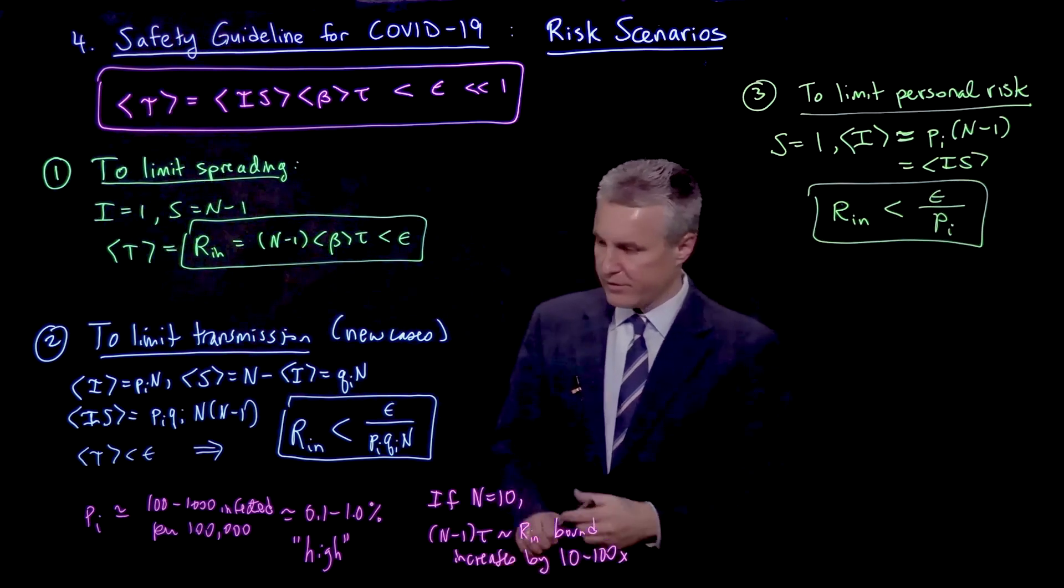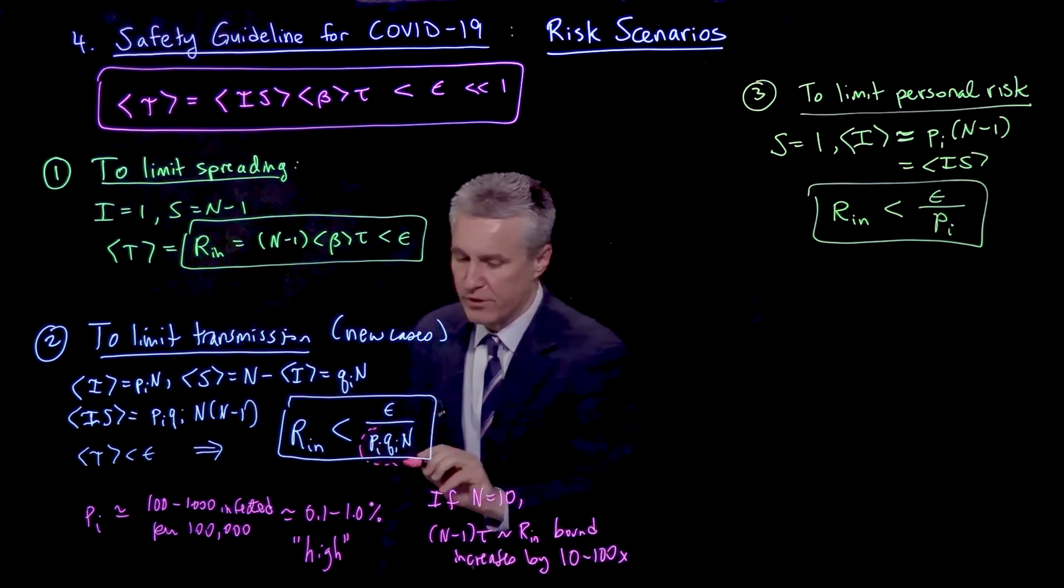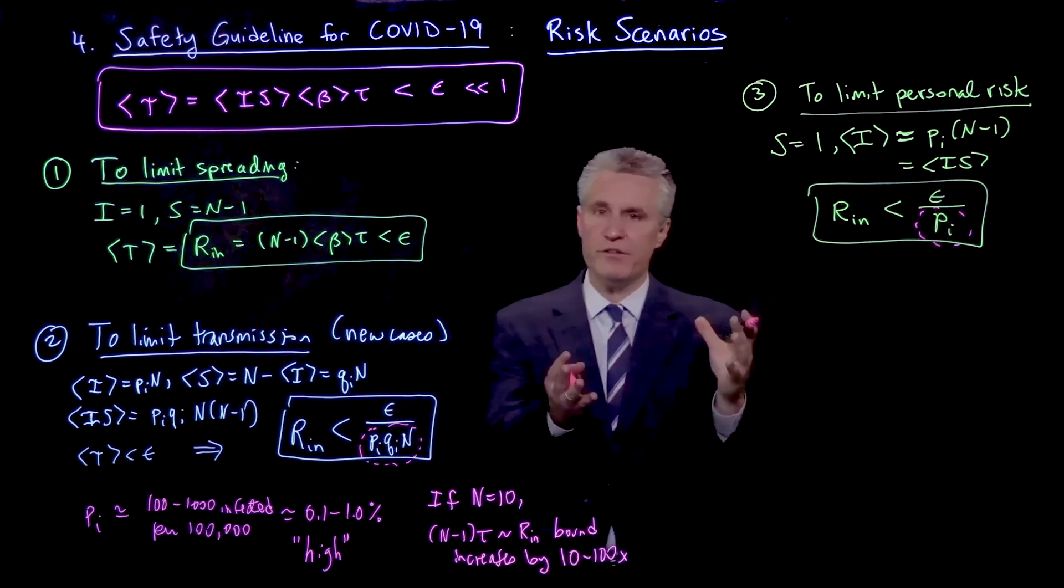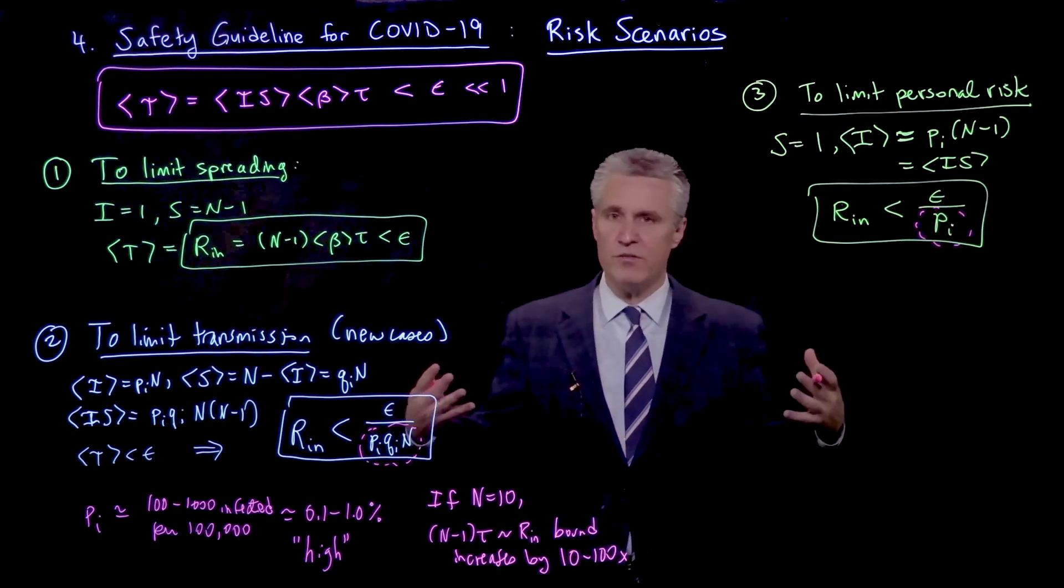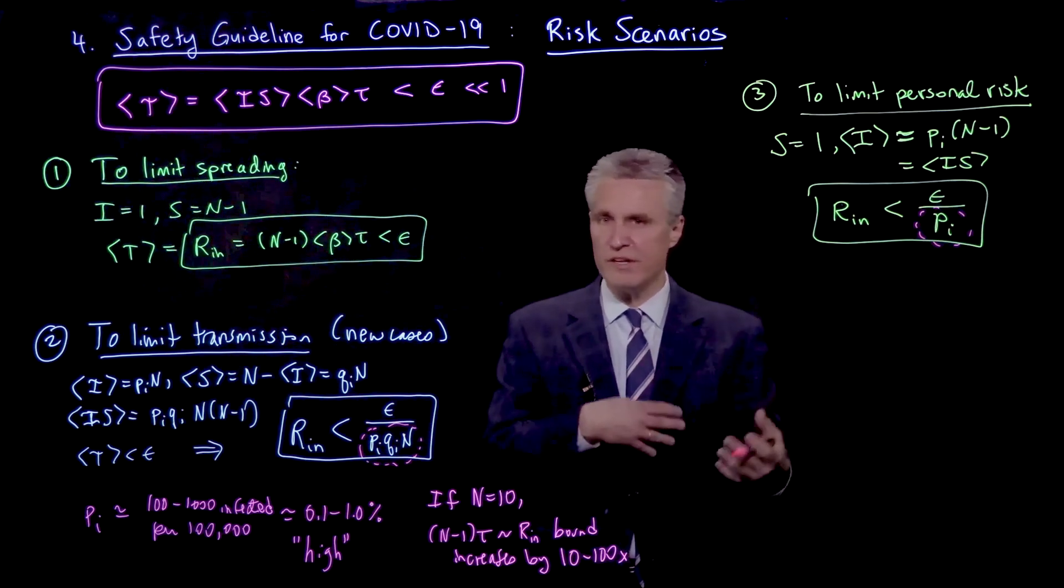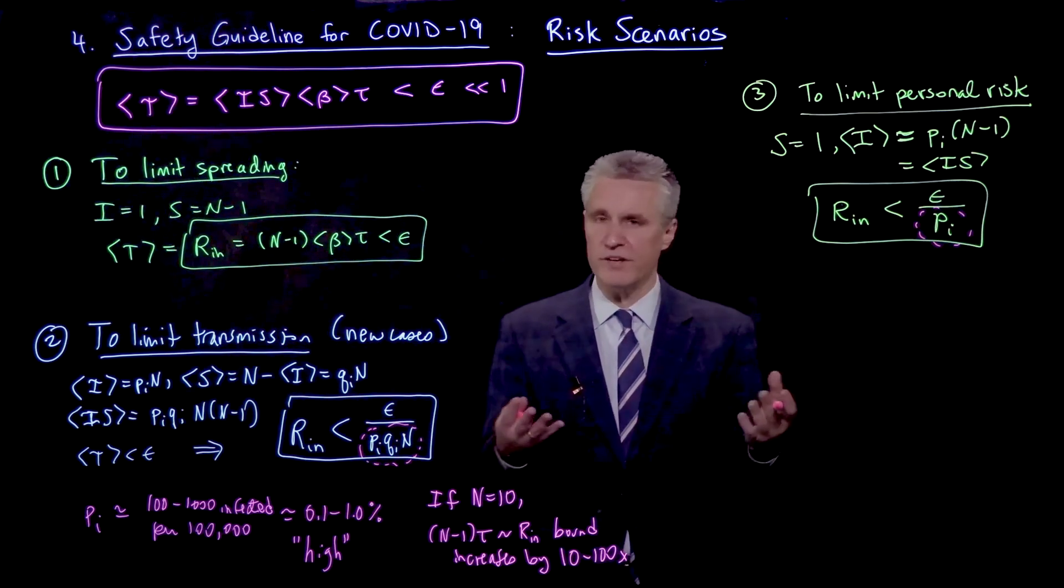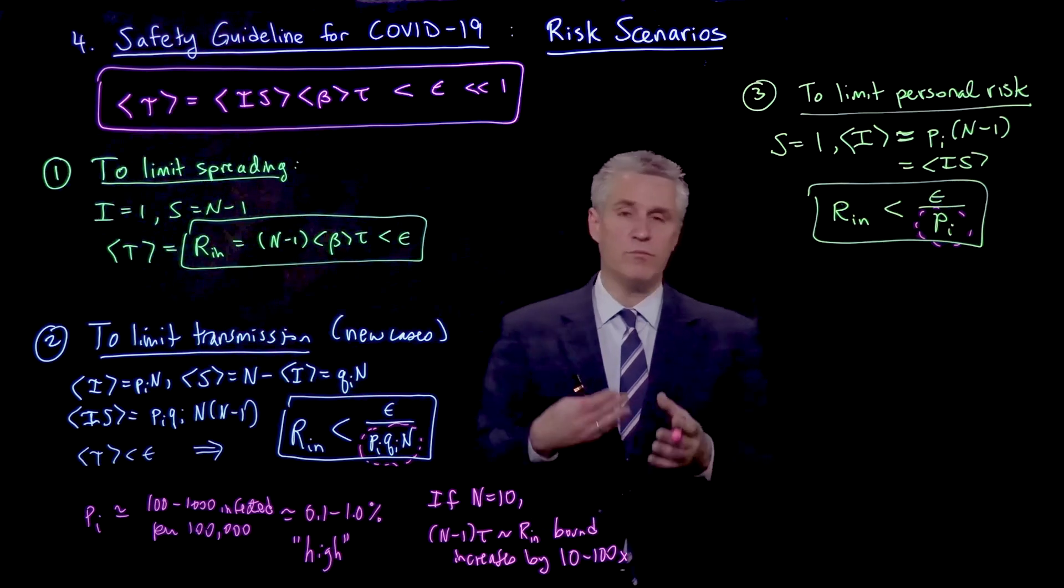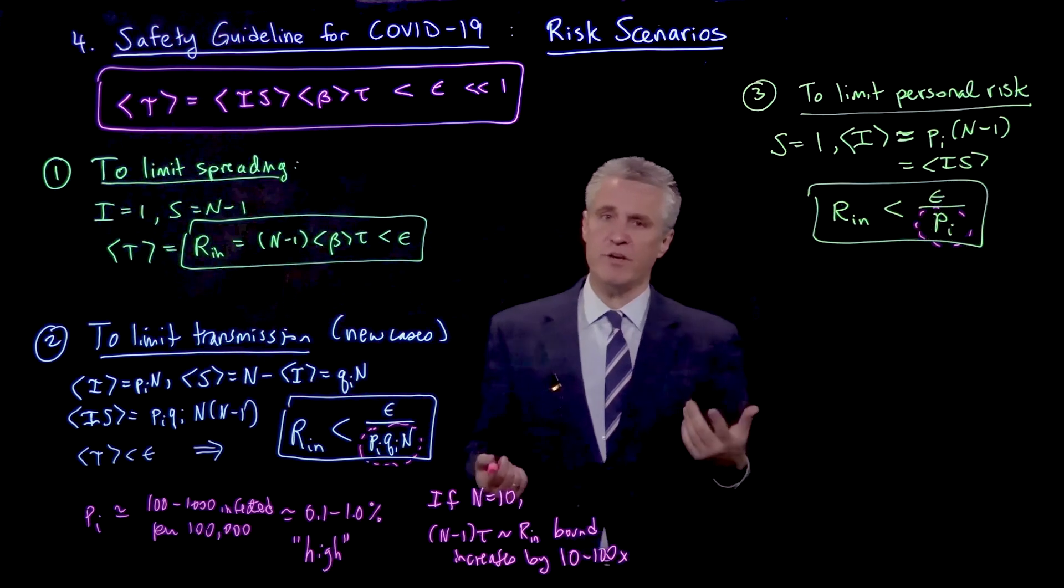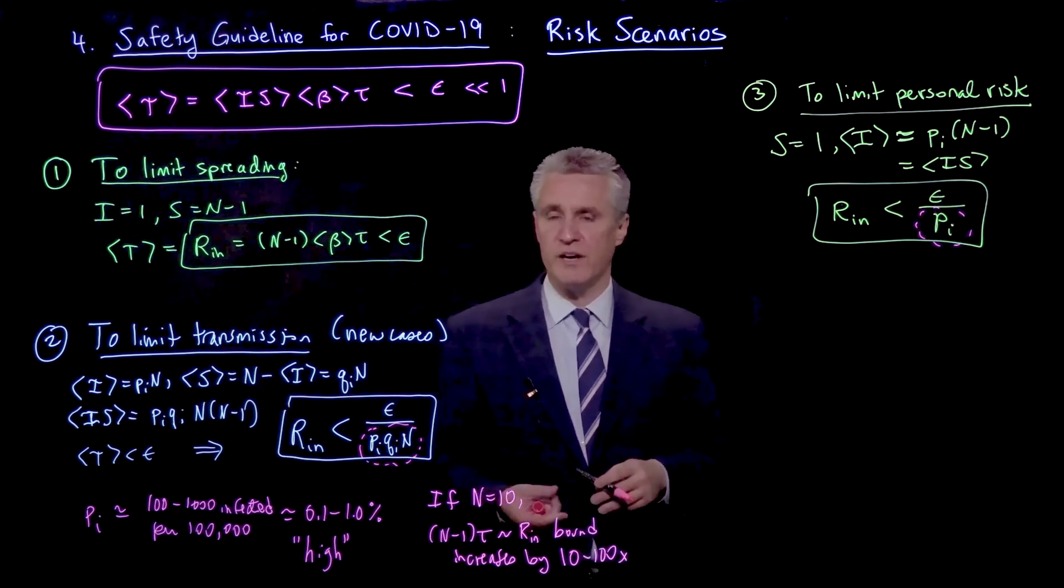So basically we have these factors that come in when we talk about prevalence that take our previous bound that brings in all of the physical quantities related to the room, its ventilation, filtration, viral deactivation, time in the room, occupancy. And we take those bounds and we can essentially rescale them with these values depending on how we are using the guideline.